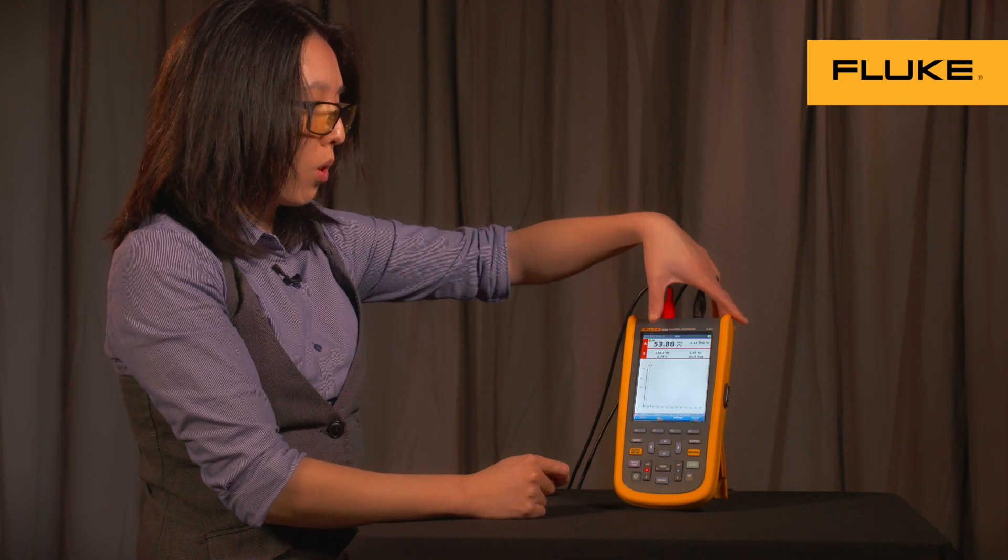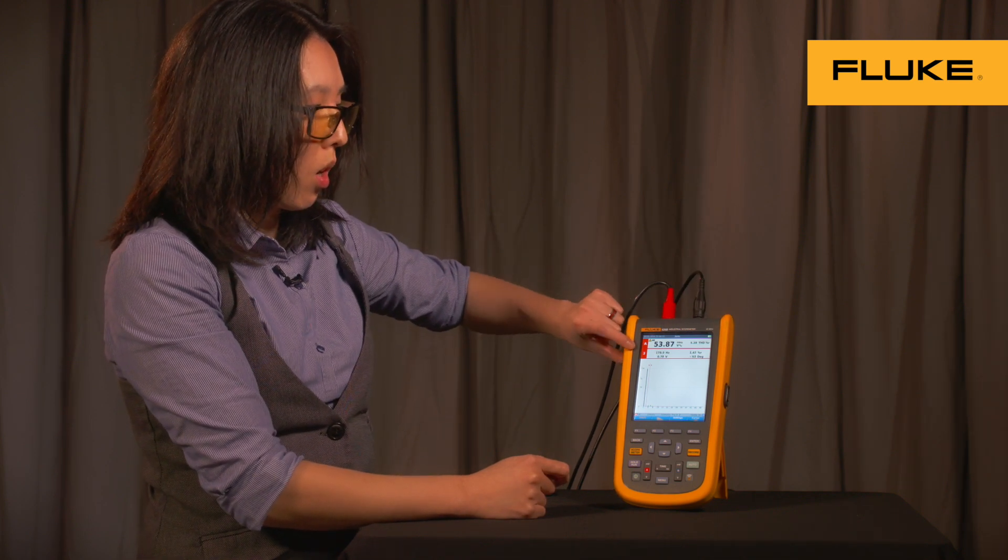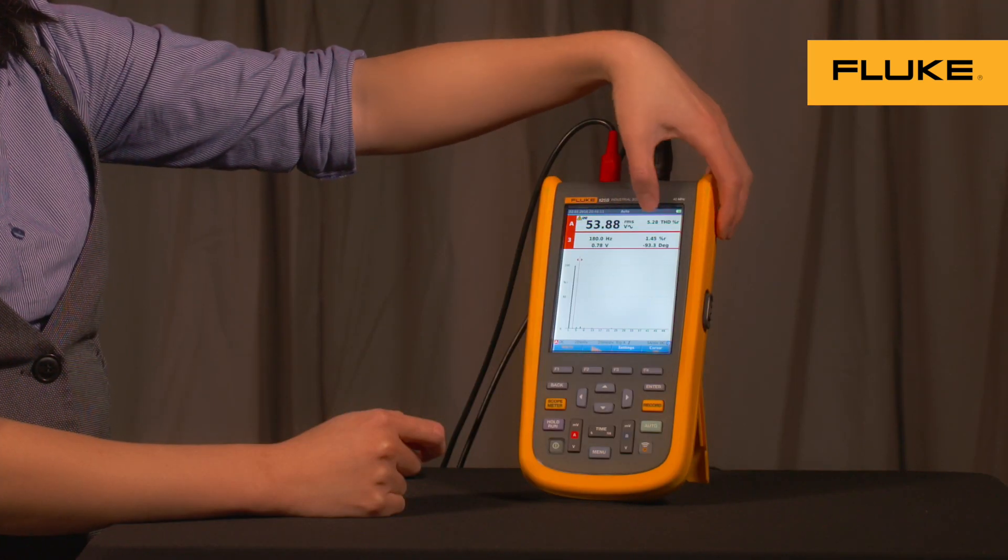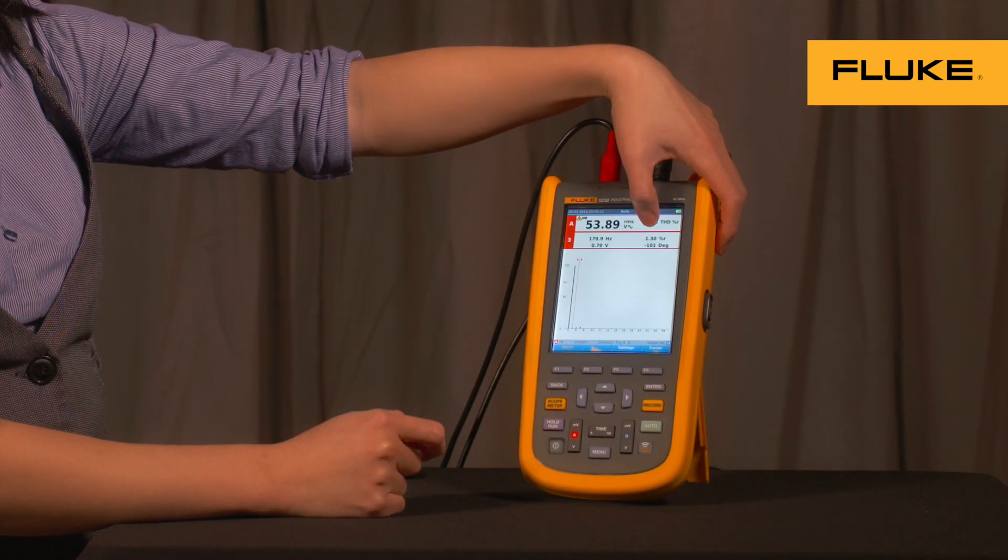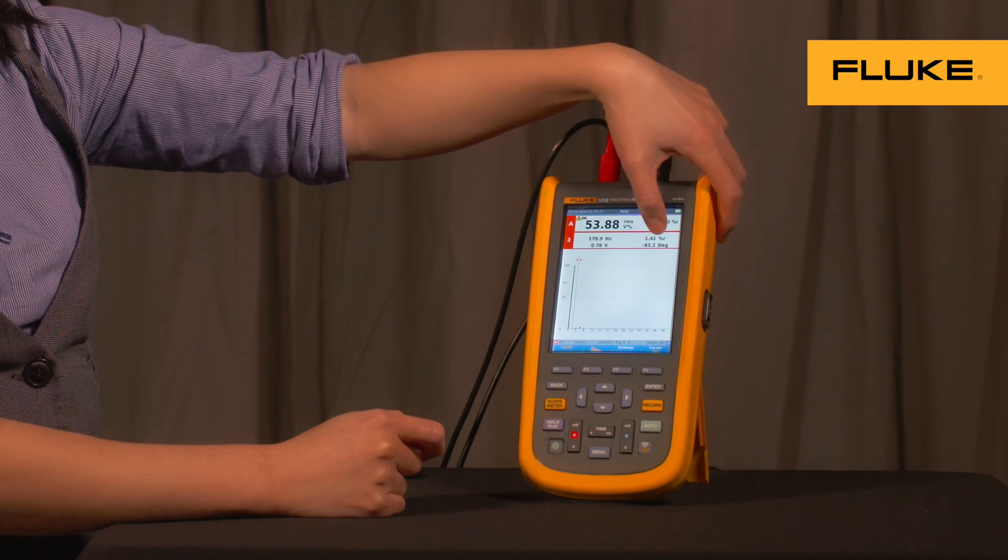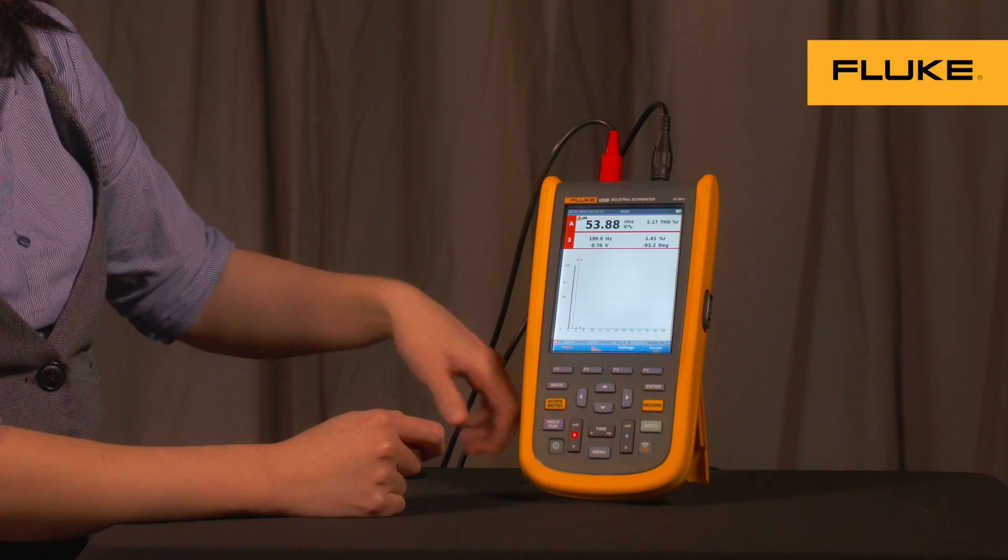Also in the screen, for this particular harmonic that you chose, you can also view its voltage, its frequency, its percent R relative to RMS, and its phase angle displayed in degrees.